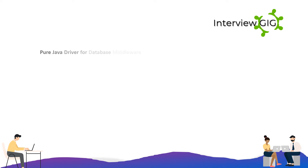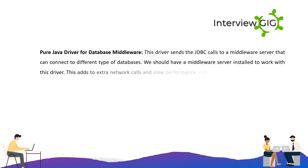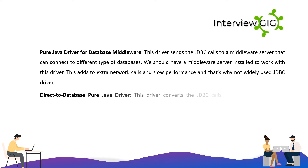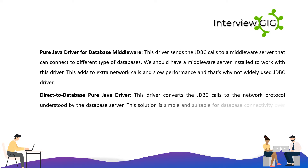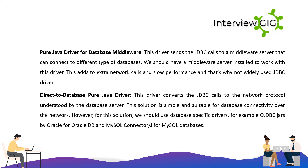Pure Java driver for database middleware: this driver sends JDBC calls to a middleware server that can connect to different types of databases. We should have a middleware server installed to work with this driver. This adds extra network calls and slow performance, and that's why it is not widely used. Direct to database pure Java driver: this driver converts JDBC calls to the network protocol understood by the database server. This solution is simple and suitable for database connectivity over the network. However, we should use database-specific drivers, for example, JDBC jars by Oracle for Oracle DB and MySQL Connector/J for MySQL databases.